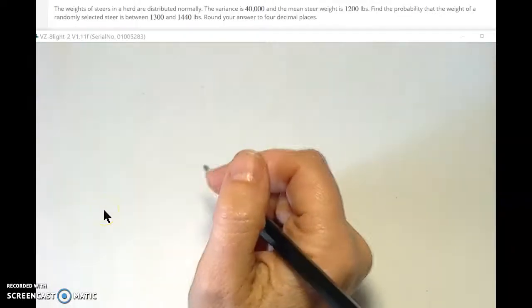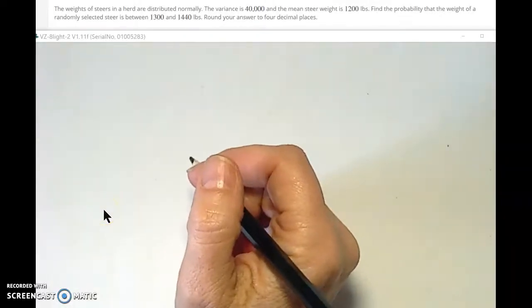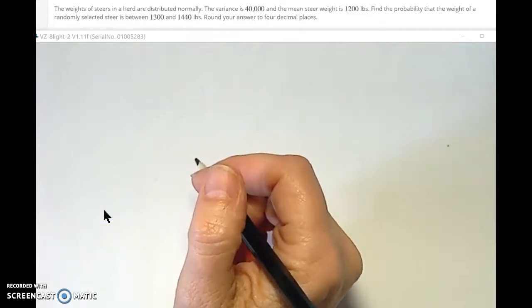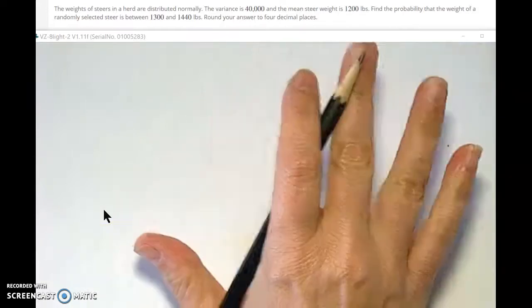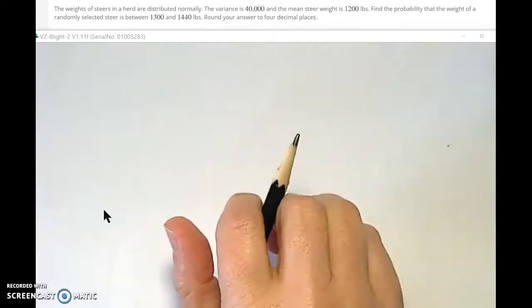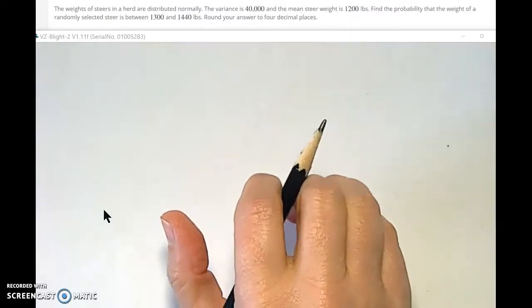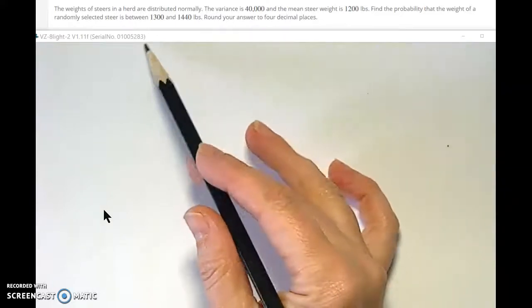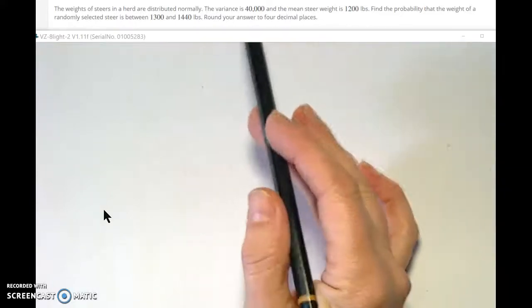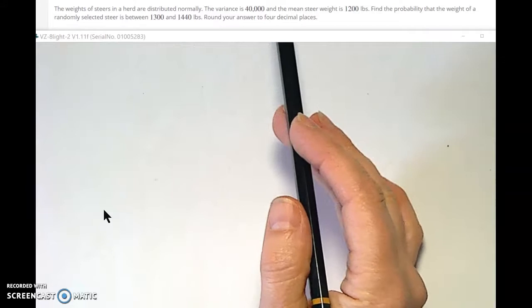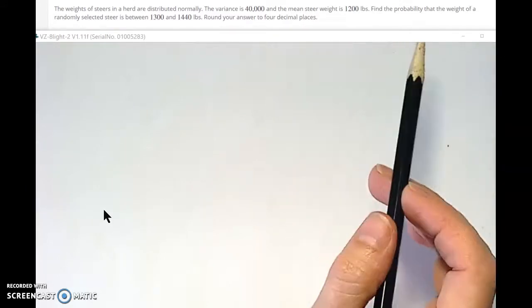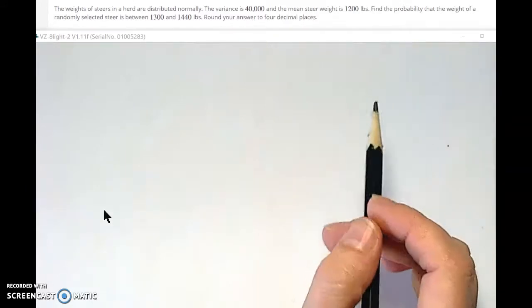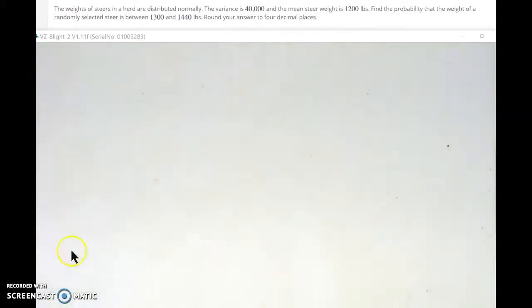All right, so there are some problems in our homework that the help menus tell you to use a TI-83 calculator, but I don't want to have to use a TI-83 calculator. I'm going to show you how to do it with tables, and it makes a lot more sense. Here we're talking about the weights of steer, and they're talking about the variance and the mean, so we're going to draw a normal curve and get started on this.